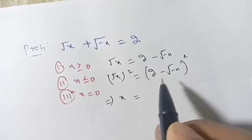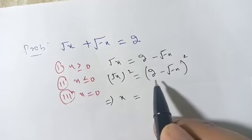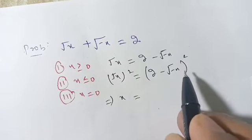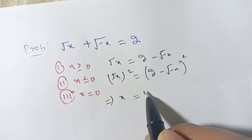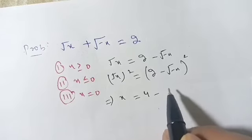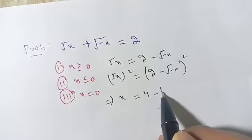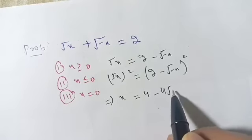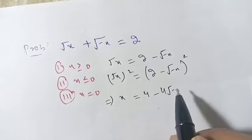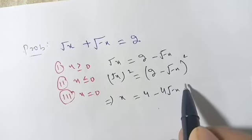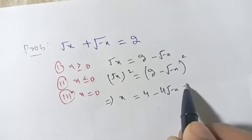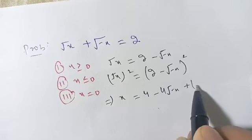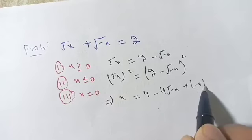x is equal to — this becomes an (a minus b) whole square — which expands to a squared, meaning 4, minus 2ab, meaning 4 root of minus of x, plus b squared, meaning plus minus of x.